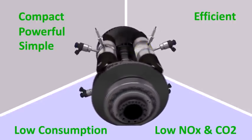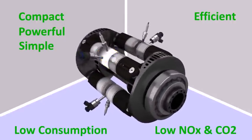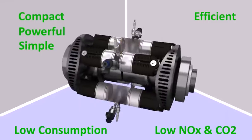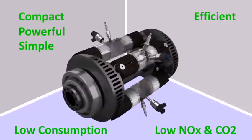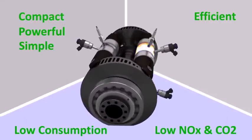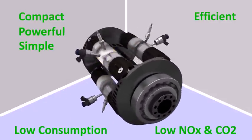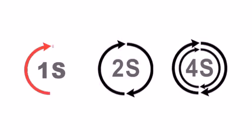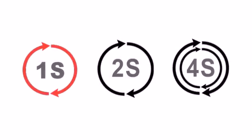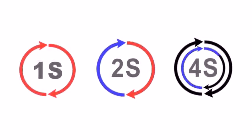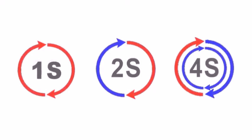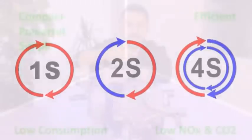The e-REX is a one-stroke engine designed from scratch with a range extender mindset, meaning it's simple and compact, yet efficient and clean, and with a perfectly balanced mass, offers the smoothest of operations with zero vibrations. Having one power stroke every half-rev means a one-stroke engine is twice as powerful as a two-stroke and four times more than a four-stroke, allowing the e-REX to be the smallest engine yet.